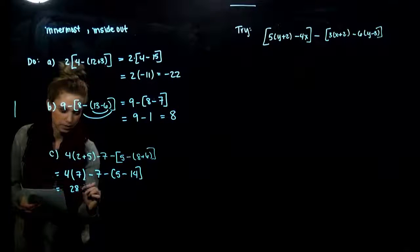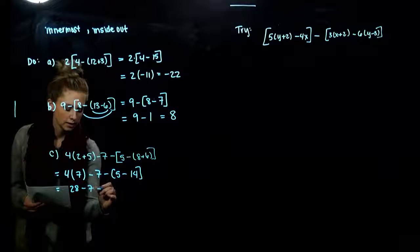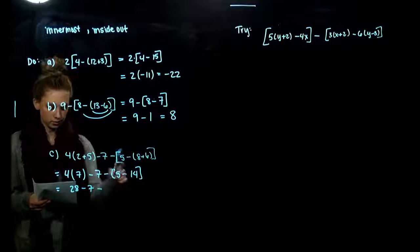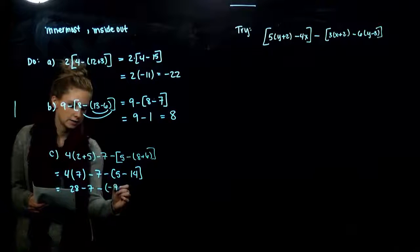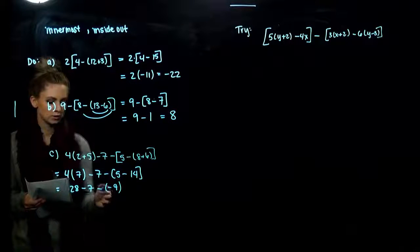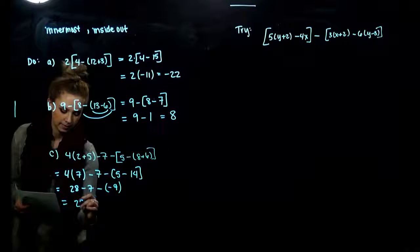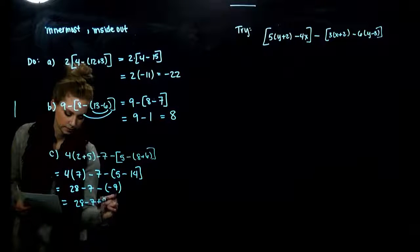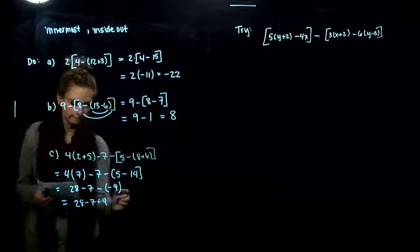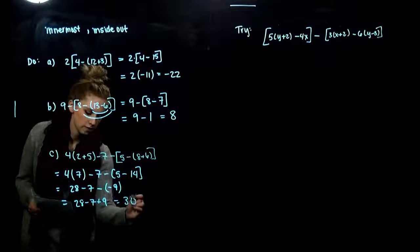So we can keep evaluating each chunk as we go. So multiplying, this is going to be 28. I'm subtracting 7. And I'm subtracting off what value here? A minus 9. So minus and minus is going to become a plus. So what are we looking at? All together, we've got 30.